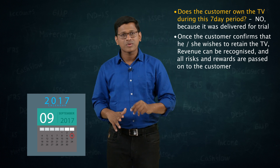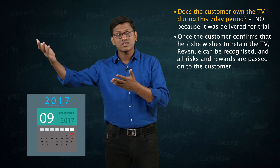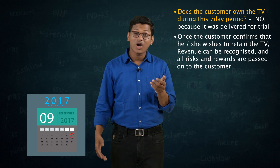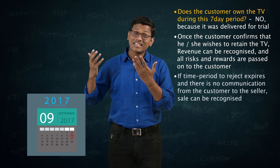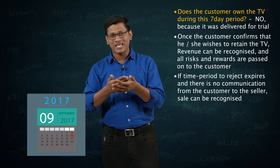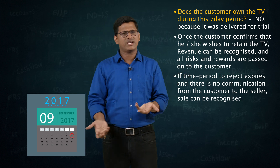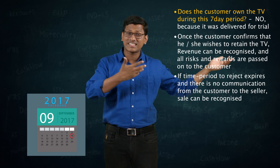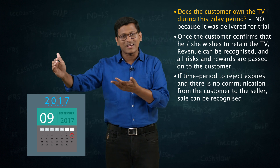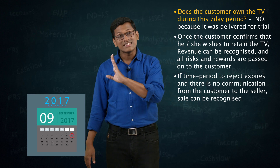Imagine you didn't call the shopkeeper. One week passes, ten days, fifteen days — you didn't call. The shopkeeper will assume: the time for rejection is over, so it is deemed acceptance. The shopkeeper gave one week to reject it, but you kept it and didn't reject within that time. So if the time to reject has expired, the shopkeeper can consider it as a sale.